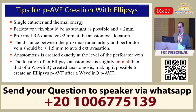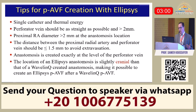Key tips for Ellipsis: it is a single-catheter, thermal energy device. The perforator vein should be at least 2 millimeters and should be straight. The distance between the proximal radial artery and the perforator should be less than 1.5 millimeters to avoid extravasation or unusual dilatations. The anastomosis is created exactly at the perforator vein. Notably, the Ellipsis anastomosis is located more cranially than Wavelink, so if Wavelink fails, you can still perform Ellipsis later.